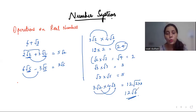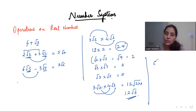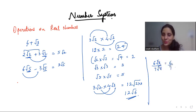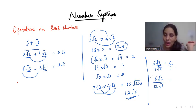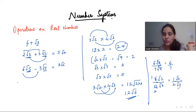The same approach applies to division. Suppose I have 6 root 3 divided by 7 root 3 — I can cancel root 3 with root 3, giving me 6 by 7. Now if I have 6 by 12 with root 2 and root 3, the roots are different so I cannot cancel them. I can only reduce the fraction: 6 by 12 becomes 1 by 2, and root 2 by root 3 stays as it is.